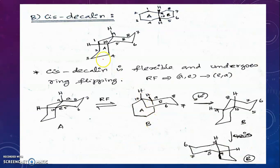Now we will discuss cis-decalin. This is the planar structure of cis-decalin. For comparison I have also shown the trans structure, taking ring A and ring B. I am now going to draw the puckered ring form of cis-decalin.